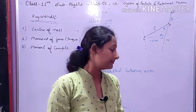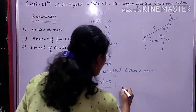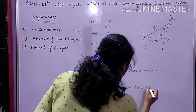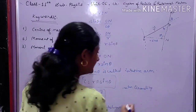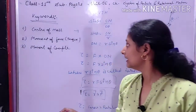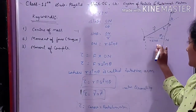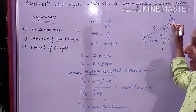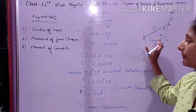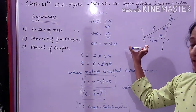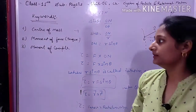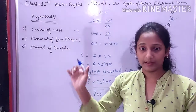Moment of force is a vector quantity. The rotation arm (r sin θ) is the perpendicular distance from the rotational point to the line of action of force. So the formula is τ = Fr sin θ, and it is a vector quantity. Next is moment of couple.